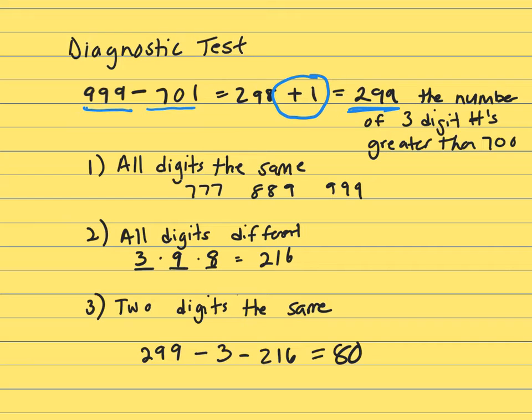Alright, there's three things that can happen. First one is, all the digits could be the same. And so we're talking about 777, 888, and 999. So there you have three possibilities.